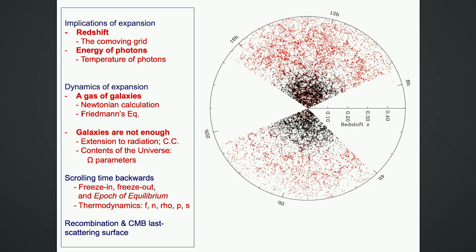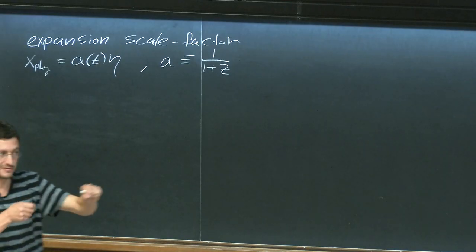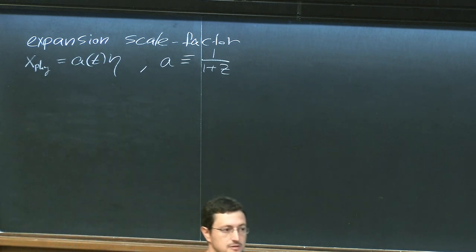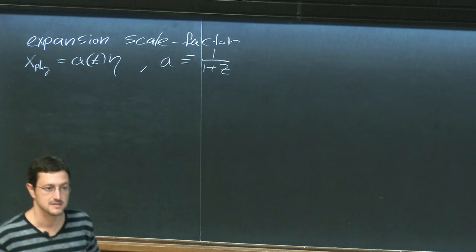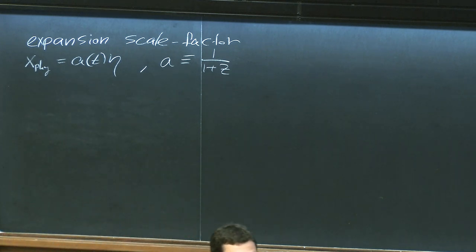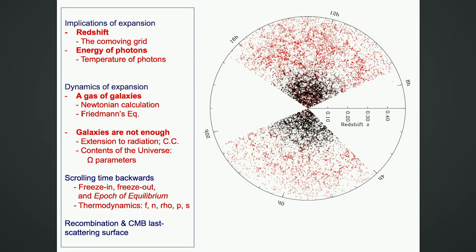In a uniform homogeneous isotropic universe, because a is just a function of time — not a function of where you are — it's just as good a label of time, as long as its evolution is monotonous. Homogeneous means we walk in a slice in redshift and wherever we look in three-dimensional space we see the same thing. Isotropic means we stand at a point, look in all directions, and see the same thing.